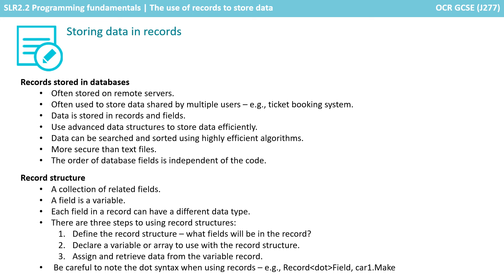Finally, we looked at the record structure available in some languages. This is simply a collection of related fields, where a field is a variable. Each field in a record can have a different data type. We covered the three steps in making use of record data structures: define the record structure, declare a variable or array to use, and assign and retrieve data. Remember to be careful to note the dot syntax when using a record.